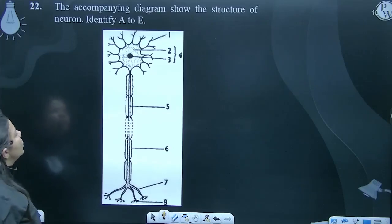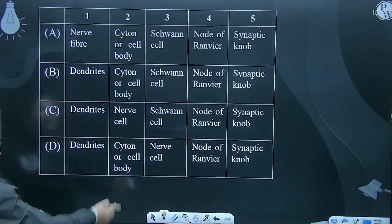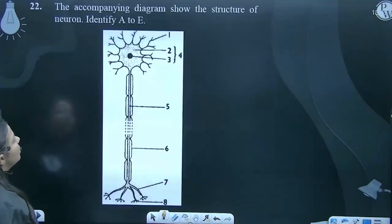The accompanying diagram shows the structure of a neuron. Identify A to E. Okay, where is A to E? In the table, you have 1, 2, 3, 4, 5, 6 labeling mentioned. So let's label it, it will be easy and quick.